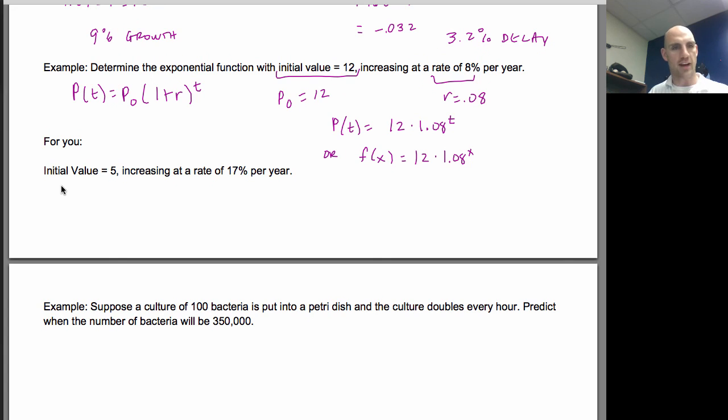All right. We're back. So initial value is our P sub 0. 17% is R equals 0.17. So our equation would be P(t) is equal to 5 times 1.17 to the T, or in terms of an F(x), F(x) equals 5 times 1.17 to the x power. All right, guys. That's the basics of this.